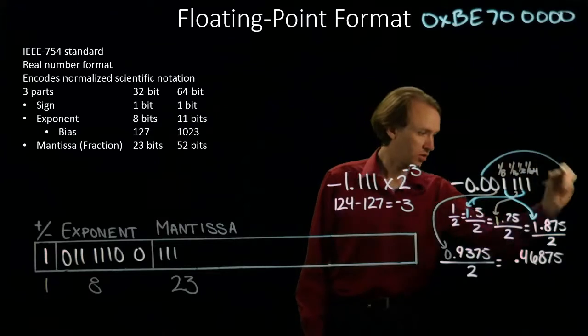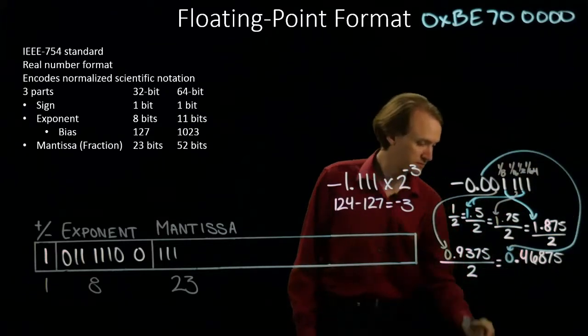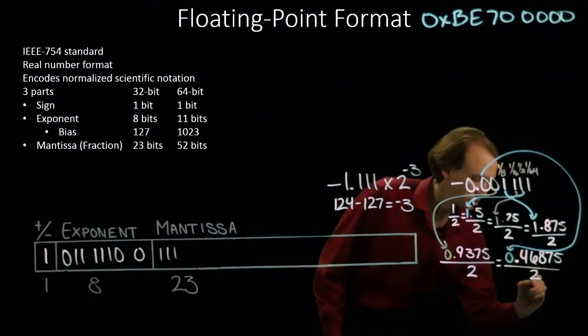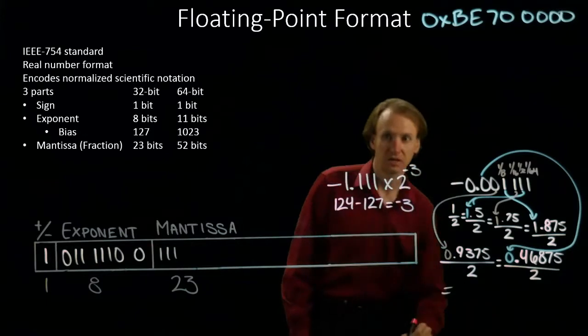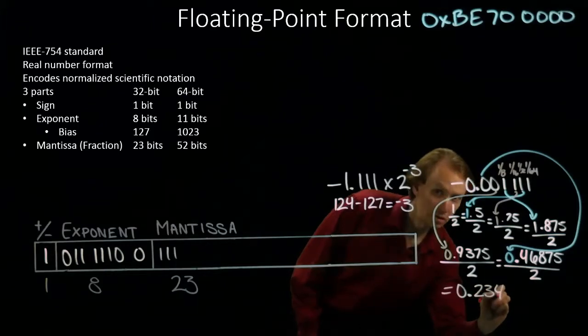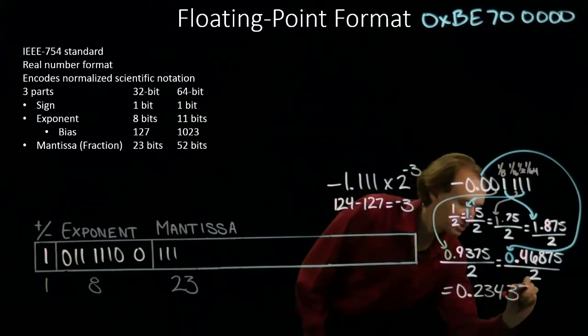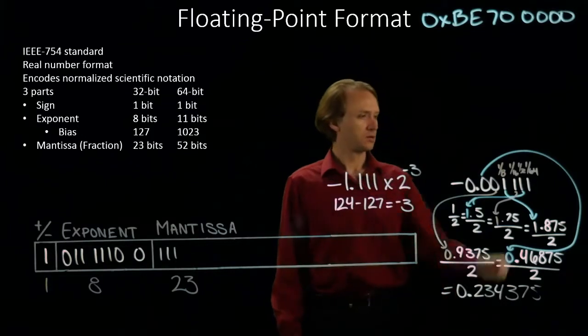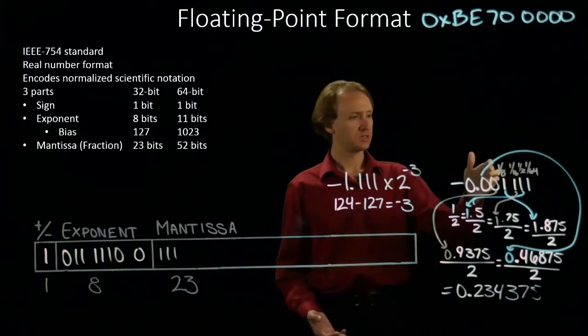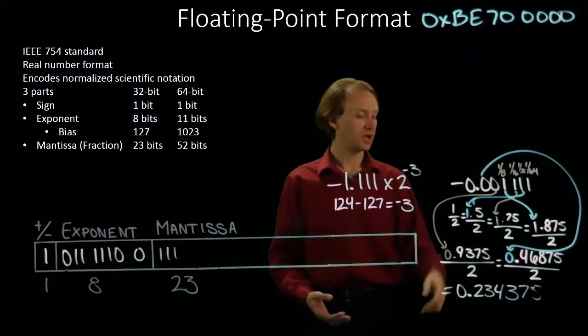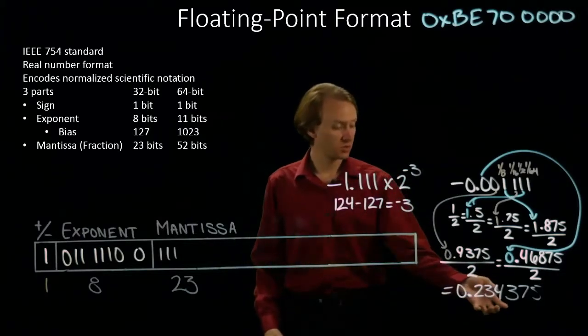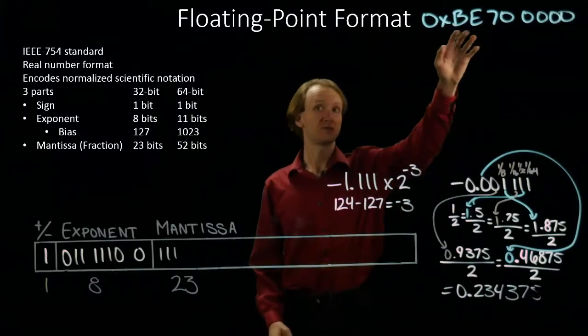I will bring over this 0 and do one more round of division, which gets me 0.234375. So this number includes 1/8, so it is larger than 0.125, but it does not include any 1/4 or 1/2, so it's slightly less than 0.25. So this is the decimal equivalent of this floating point number.